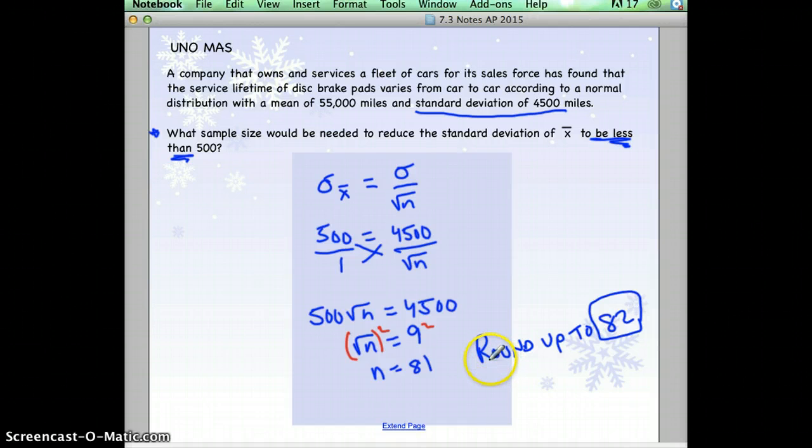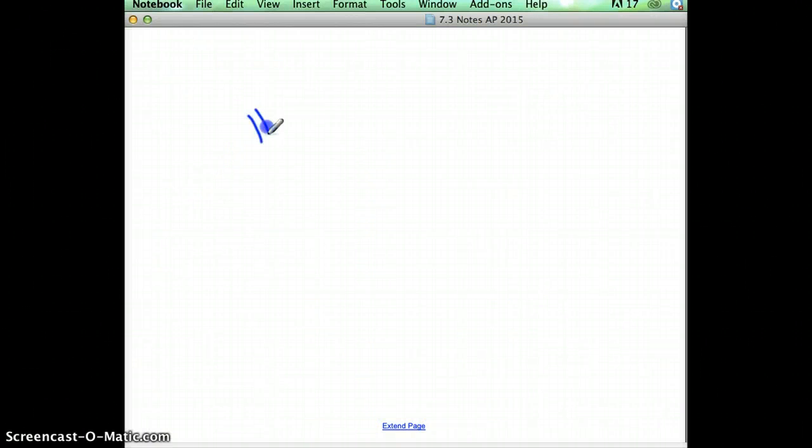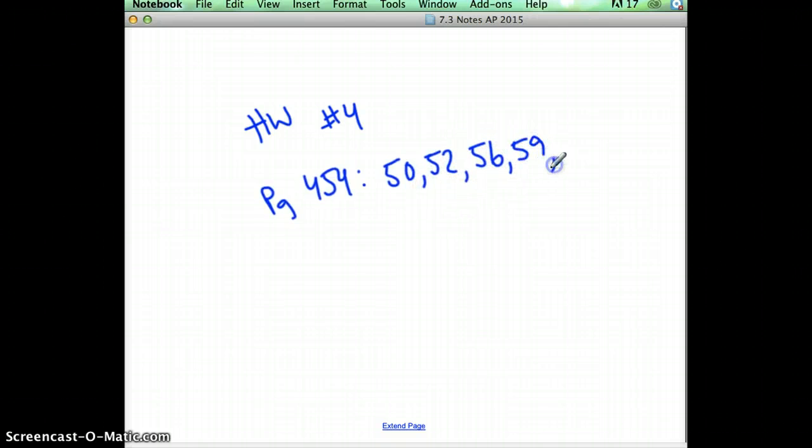So, you've watched both parts of the videos. I'm going to put up the answer keys to homework 1, 2, and 3 for you to check. The homework is in the book. It's homework number 4. So, homework number 4 is page 454. And it's 50, 52, 56, 59, and 64. That's your homework for tonight.